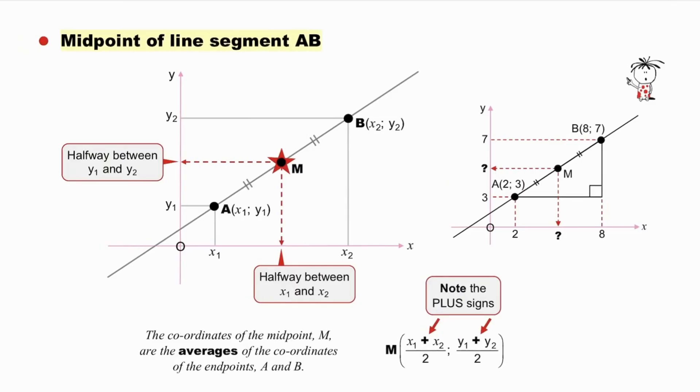We return to the original slide, and so now we know that not only are the coordinates of the midpoint M halfway between the coordinates of the endpoints, but they are also the averages of the coordinates of the endpoints A and B. And that is really important, because it explains the plus signs here and here in the formula. The formula for the midpoint is the sum of the x-coordinates divided by 2, the sum of the y-coordinates divided by 2, because these are the averages of the coordinates of the endpoints. A common error is that minus signs are used here due to rote learning without understanding.